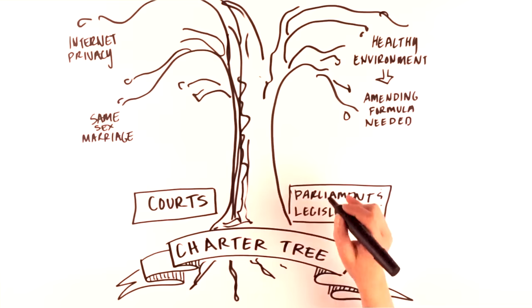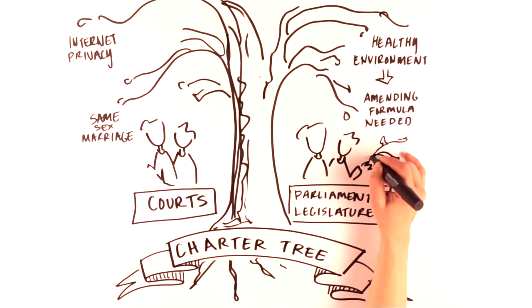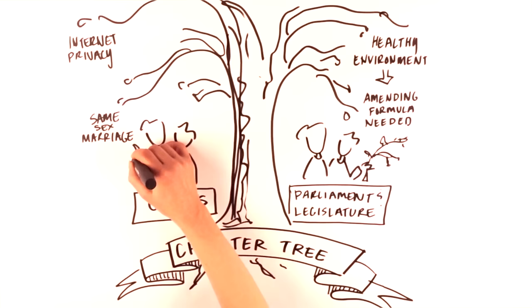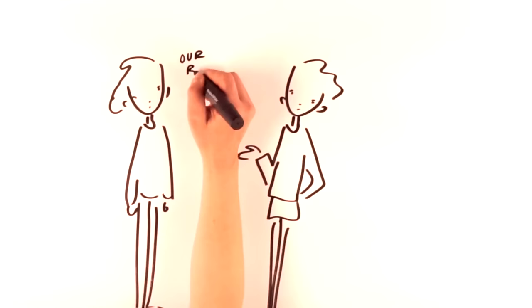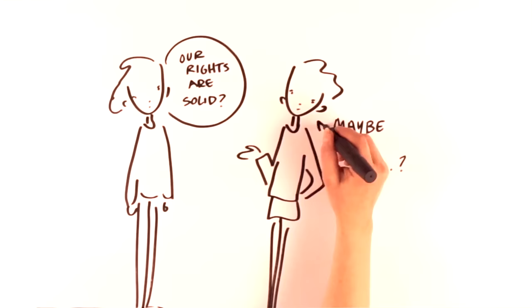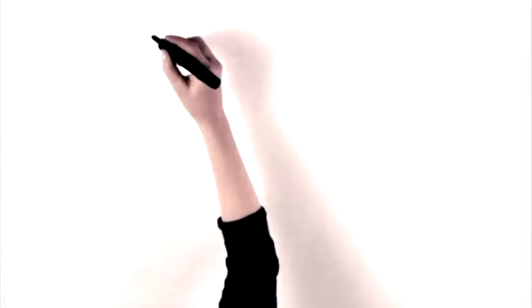The living tree has many caretakers. The Canadian Parliament and provincial legislatures are responsible for adding and removing branches, and the courts prune those branches. Because the Constitution and Charter are difficult to change, they are a strong guarantee of our continuing rights and freedoms. At the same time, some people worry that they are much too difficult to change, even when there might be a really good reason to do so.